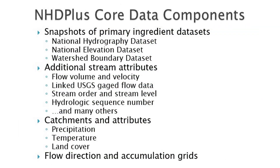NHD Plus is a suite of geospatial products that includes complete snapshots of the primary ingredient data layers, new stream attributes including flow volume and velocity estimates, and a variety of value-added attributes used to enhance display, allow rapid traversal of the stream network, and support modeling. Also included is a set of USGS stream gauges linked to the NHD Plus network and used in estimating flow volume and velocity. Catchment and catchment attributes including precipitation and temperature used for estimating flow, as well as NLCD land cover, and the flow direction and accumulation grids produced to support the catchment delineation process. The vector components of NHD Plus are available in shapefile/DBF and file geodatabase formats, and the raster components in grid format.